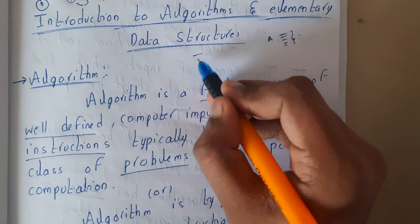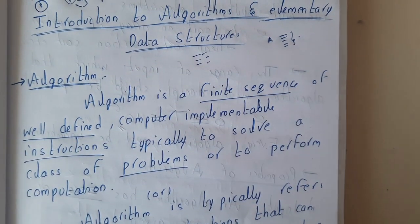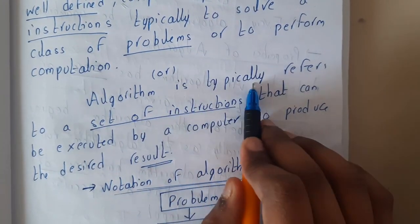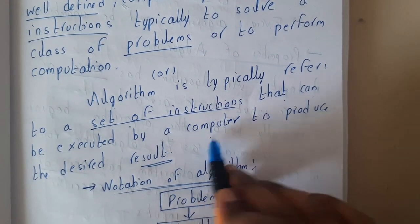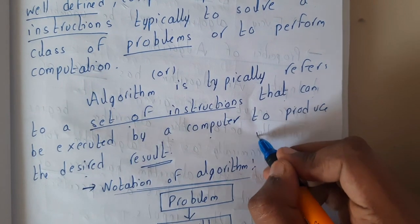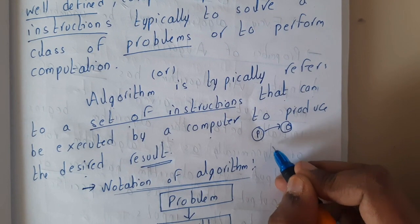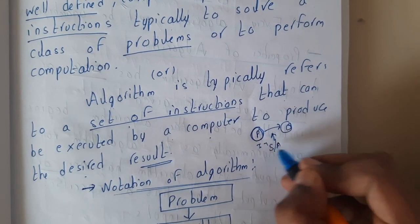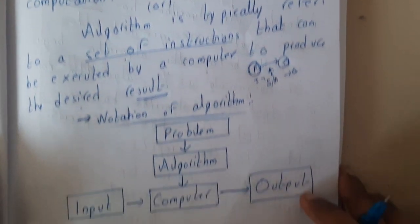Like if you want to make a coffee, you'll have a few steps — step one, step two, step three — you follow them to make the coffee. In the same way, an algorithm is following steps to write a program. An algorithm is typically referred to as a set of instructions that can be executed by a computer to produce the desired results. You are given a problem, and you design a solution: if you give the input it will give you the output, step by step.